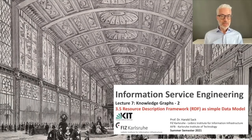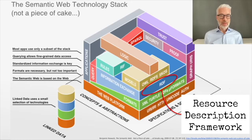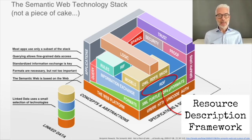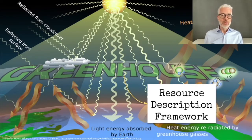This is Information Service Engineering, lecture number 7, Knowledge Graphs part 2. In this section of the lecture you will learn about the Resource Description Framework, RDF, which is a simple data model for the Semantic Web. We have already learned about the Semantic Web Technology Stack, which consists of all the protocols subsumed under the W3C, the World Wide Web Consortium, responsible for web standards like URI, HTTP, and other web protocols. They also did the standardization of Semantic Web protocols. We are now going to look at the blue section in the layer cake — this is the Level Information Exchange — where we will talk about RDF using examples based on climate change and the greenhouse effect.